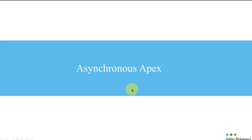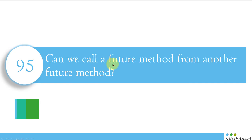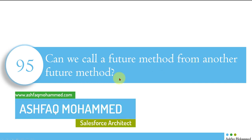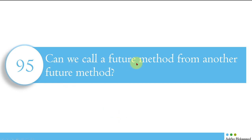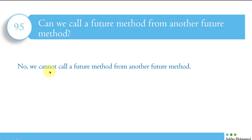We are continuing the future methods today. The very first question is: can we call a future method from another future method? So far in our previous video we have seen how a future method works. Now we need to understand from where we can call the future method. The answer is: no, we cannot call a future method from another future method — straightforward.